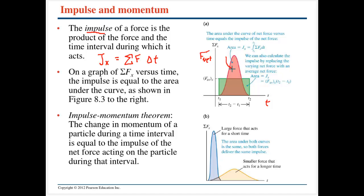Looking at the red curve here, that's a very complicated looking force — it could be me stretching a string, pulling harder and harder, then slowly releasing it over some period of time. The impulse imparted is the sum of all those forces multiplied by their tiny time intervals, which is the area under that curve. We can replace that with an average force over the same time interval — shown as the green box — which gives the same area and the same impulse.